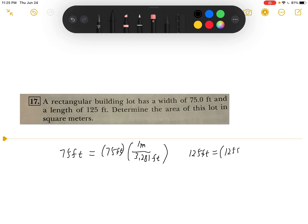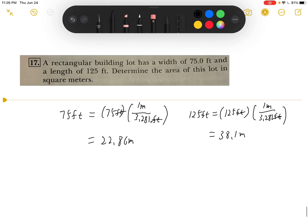125 feet times 1 meter over 3.281 feet. When we cancel the feet out, we will have them in meters. So 75 feet will equal 22.86 meters and 125 feet will equal 38.1 meters. And we just multiply